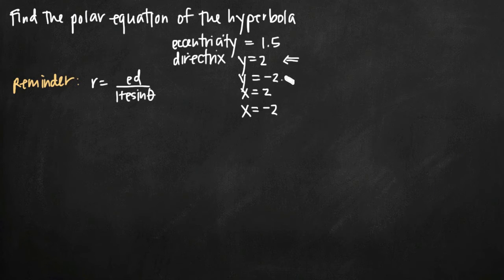In the other cases—y equals a negative constant, x equals a positive constant, or x equals a negative constant—you're going to be using a different formula. The only difference will be the positive sign will be a negative sign here, and instead of sine of theta, you'll have cosine theta here.